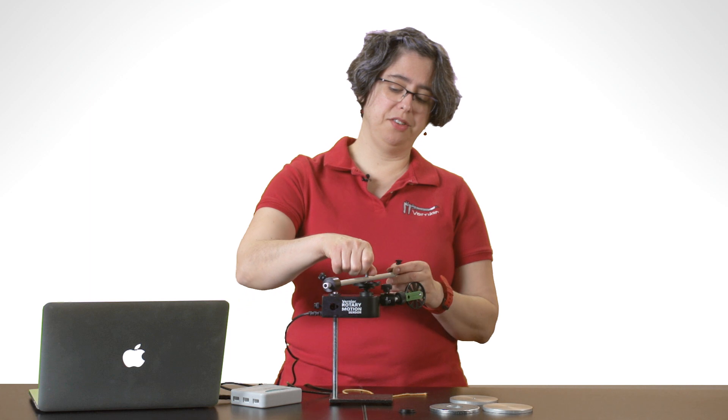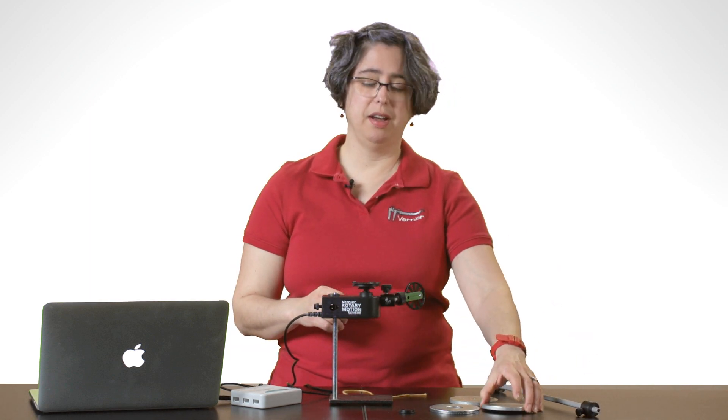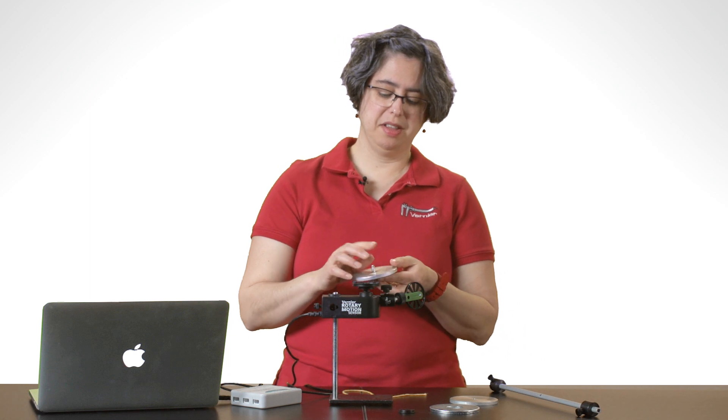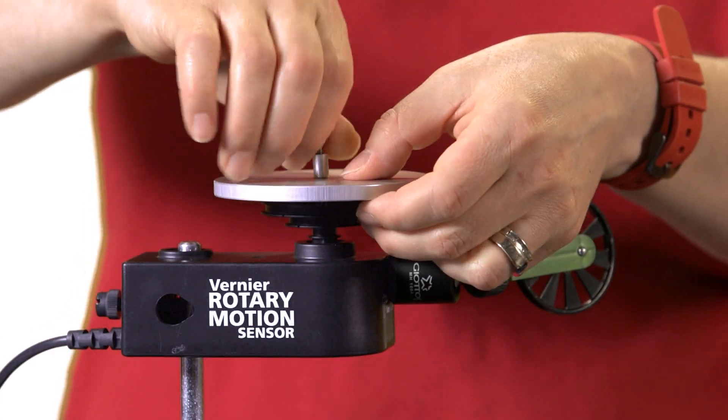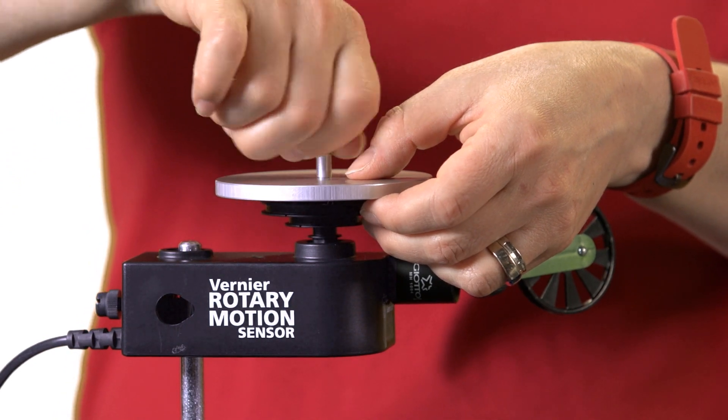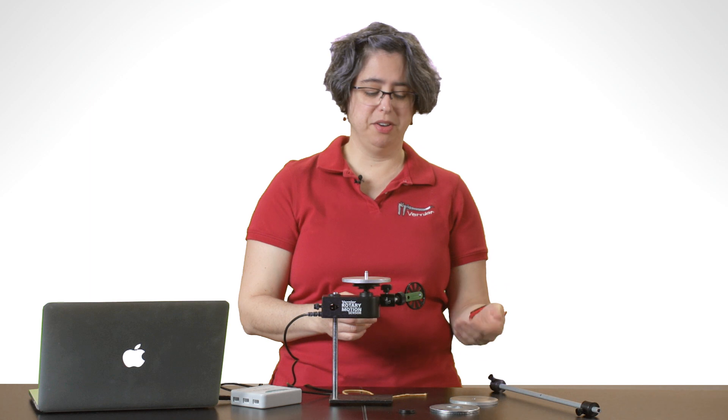In addition to the accessory rod, we also have some aluminum disks. They go on the same way with the screw and the collar. With this, you can determine the moment of inertia of a disk.